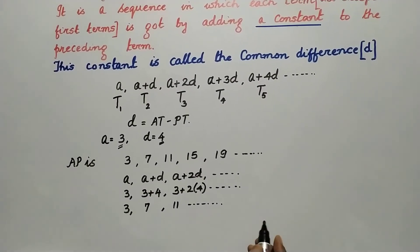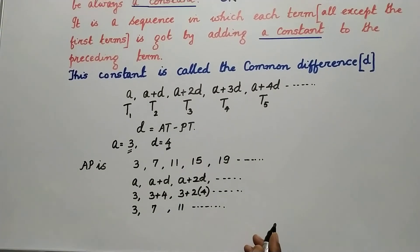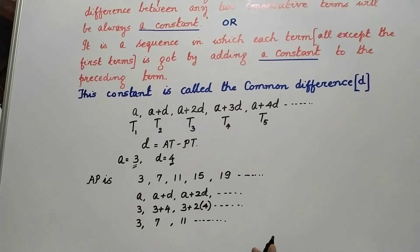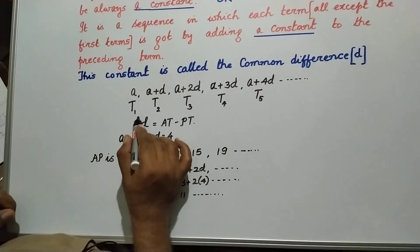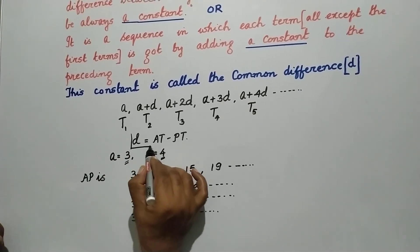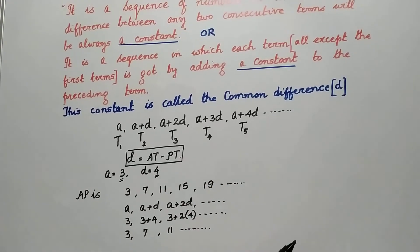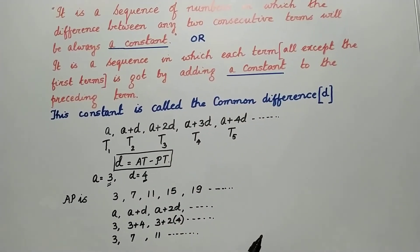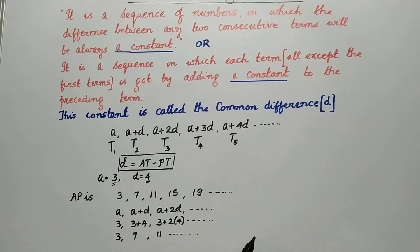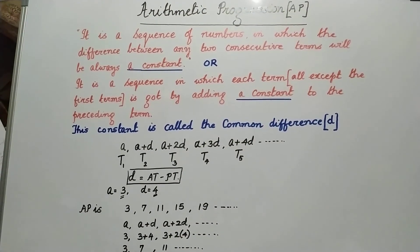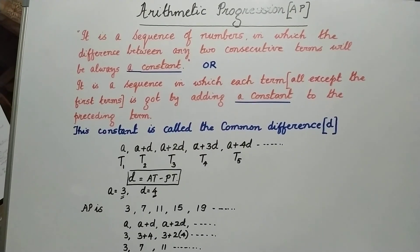I hope you have understood what an arithmetic progression is, what its general form is, and how the common difference is found — by any term minus the previous term. In the next capsule, we will derive some formulae. Please take care and be safe.